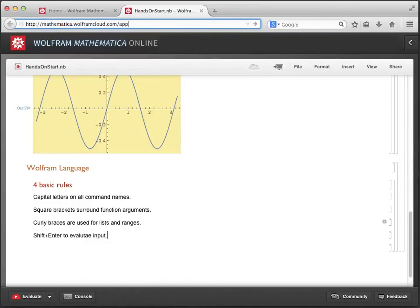This last one is really important, because Mathematica Online is a powerful tool for creating technical documents. Pressing the enter key by itself will create a carriage return or new line. So it's shift and enter, or enter a numeric keypad, that will tell Mathematica Online that you're ready for it to evaluate some type of input.